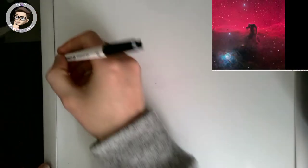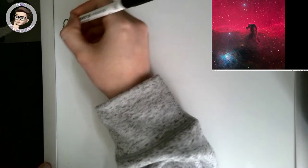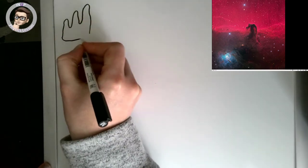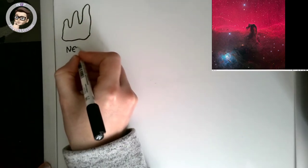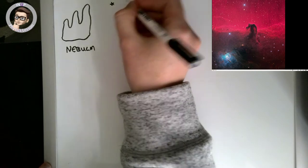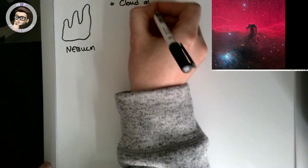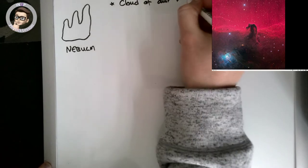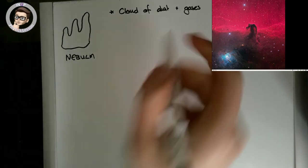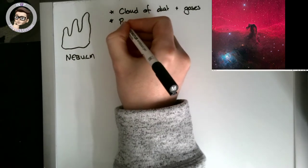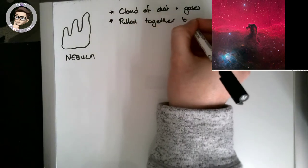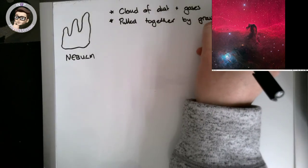We're going to start by drawing a nebula. A nebula is a cloud of dust and gases, and it's pulled together by gravity. So gravity is bringing those dust and gases together.